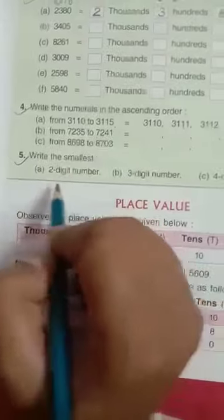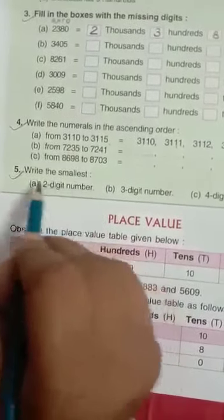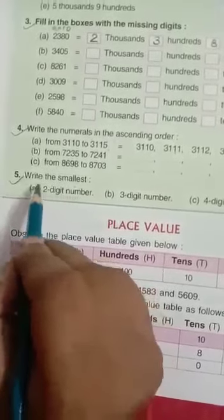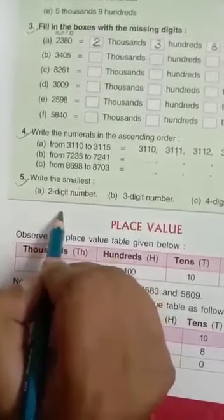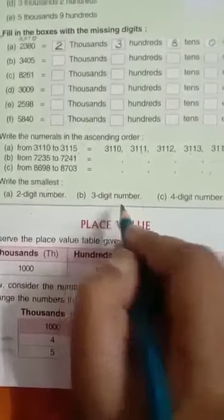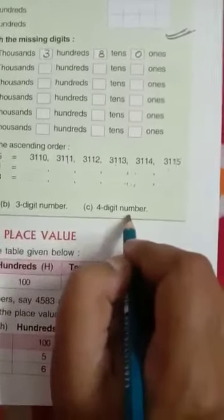Okay. Now question number five is, write the smallest two digit number. As you know, the smallest two digit number is, already I have taught in the previous class. The smallest two digit number is, 10. Okay. Smallest three digit number is, 100. And smallest four digit number is, 1000.